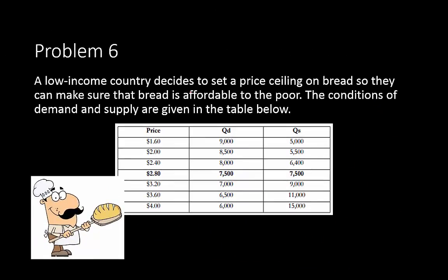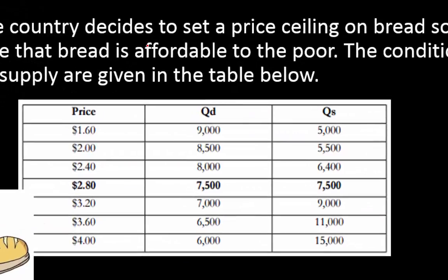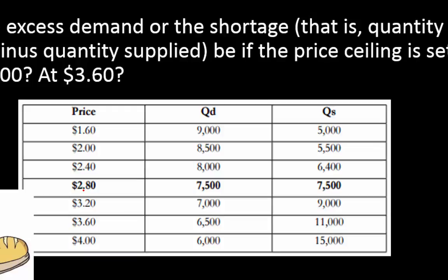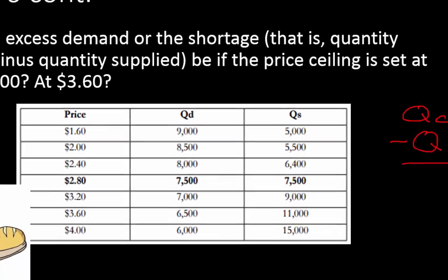Problem 6: a low-income country sets a price ceiling on bread to make it affordable to the poor. The conditions of demand and supply are given in the table. Without the price ceiling, equilibrium is at a price of $2.80 and 7,500 loaves of bread. The question asks for the excess demand or shortage — that is quantity demanded minus quantity supplied — at different price ceiling levels.